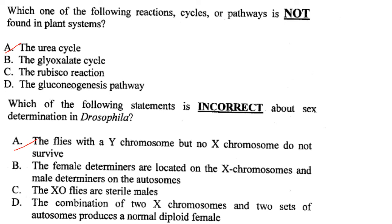Which of the following reactions, cycles or pathways is not found in the plant system? It is the urea cycle. Answer is option A.